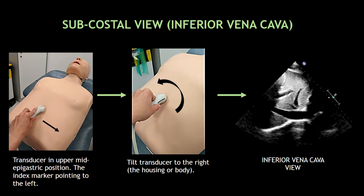Now I'm going to show you how to obtain this subcostal view. This view is concentrating on the inferior vena cava. To obtain this view, place the transducer in upper mid-epigastric position with the index marker pointing to the left. Next, tilt the body of the transducer to the right, and sometimes you will have to ask the patient to take a deep breath in. With these two steps, you're going to be able to visualize the inferior vena cava.